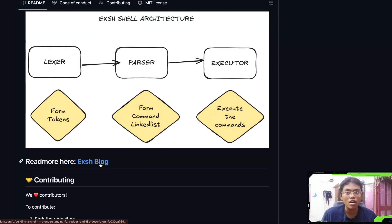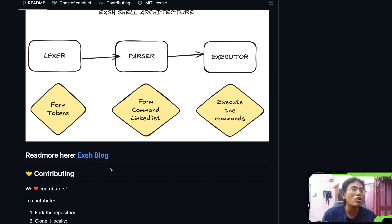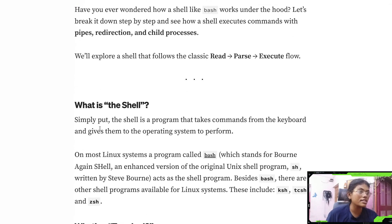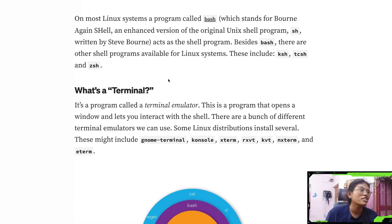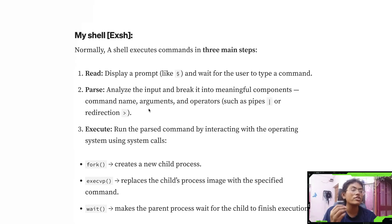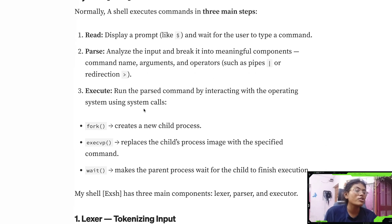I've created a blog post for this because many of you said you couldn't understand these things from the video alone, so you can use it for reference. So: what is a shell? A shell takes commands from the keyboard and gives them to the operating system to perform. There are three main steps any shell does — firstly it reads from the CLI, then it parses the input by breaking it down into meaningful components, and then it executes.